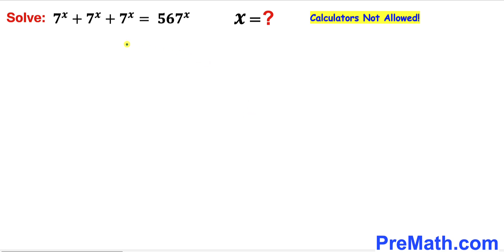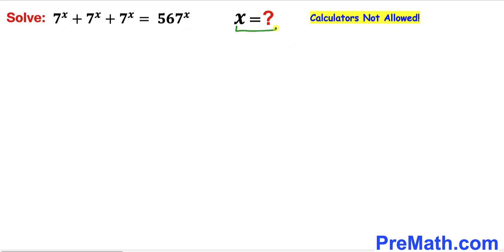Welcome to pre-math. In this video we are going to solve this given exponential equation: 7^x + 7^x + 7^x = 567^x. In other words, we are going to solve for the x value and we are not supposed to be using calculators of any kind.